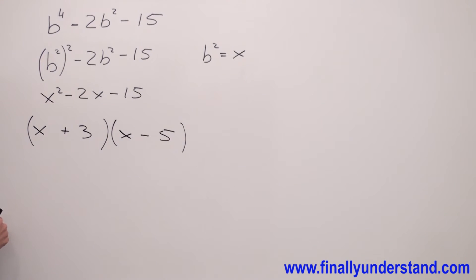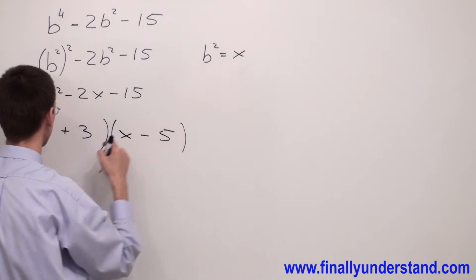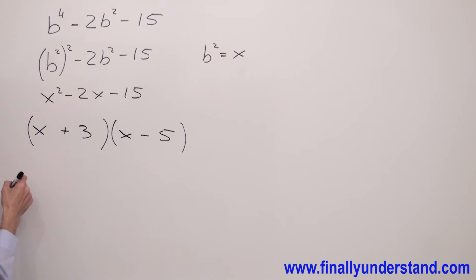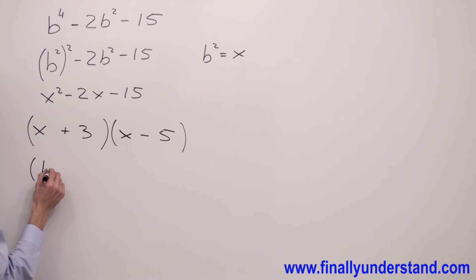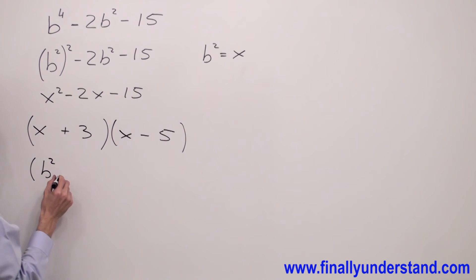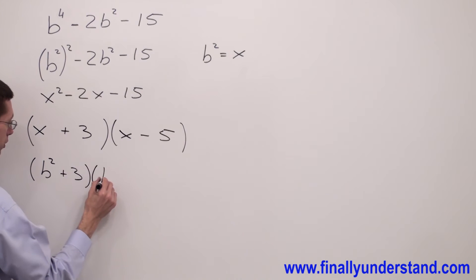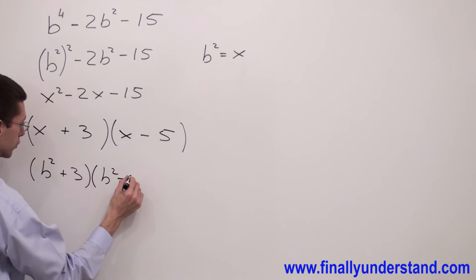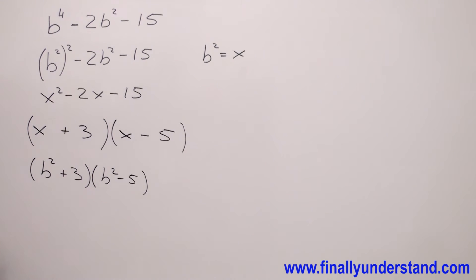Next, remember that we said x is equal to b squared. In order to get the final answer, I'm supposed to replace x with b squared again. That's why I'm going to write (b squared plus 3) times (b squared minus 5).